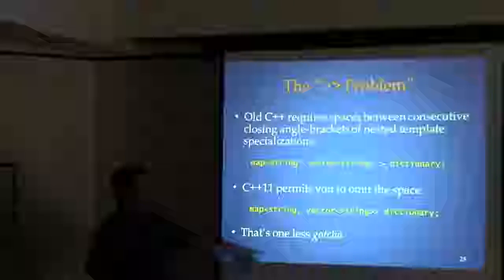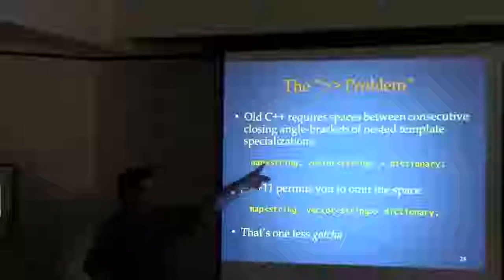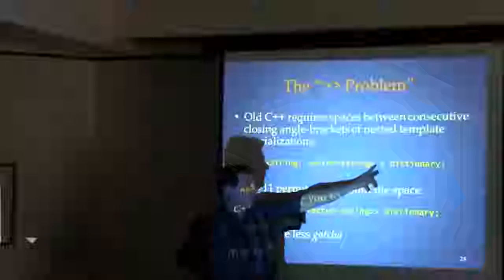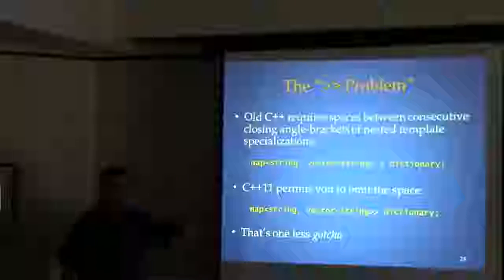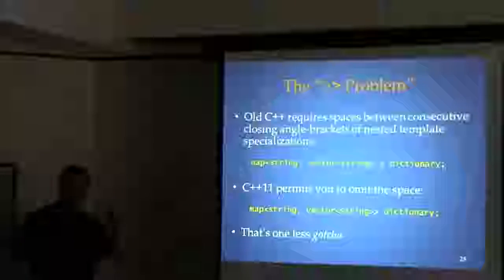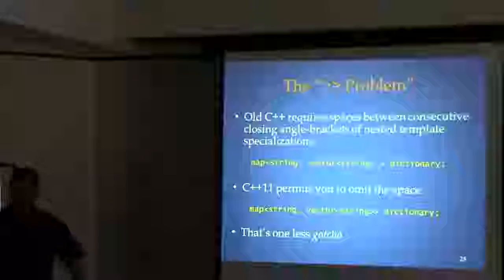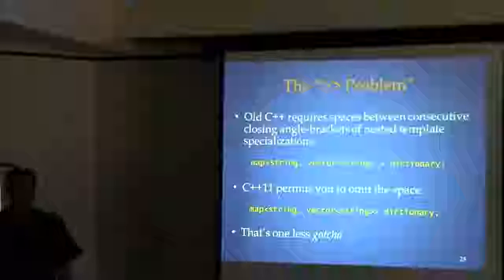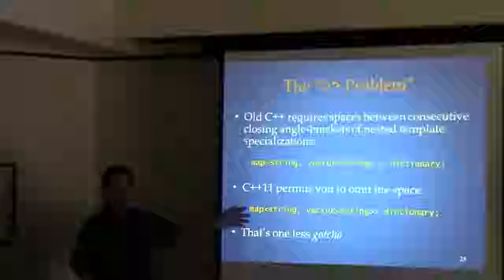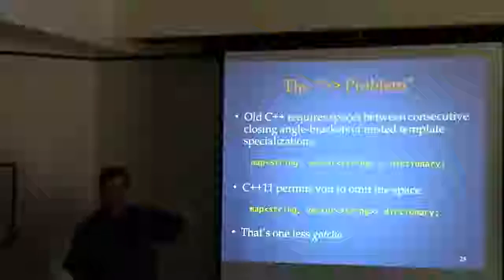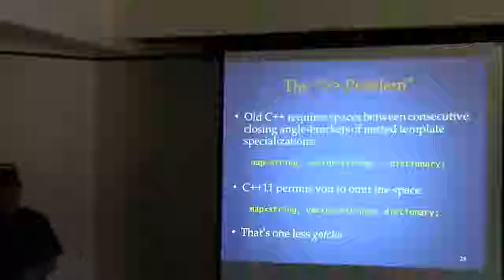Here's one that's pretty easy to explain. In old C++, if you had nested template specializations you were obliged to put a space in there, or else the parser would see it as a double greater-than operator. Now in new C++ you don't have to do that anymore.